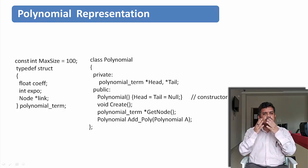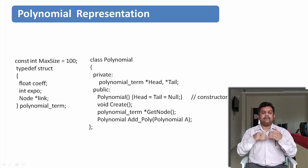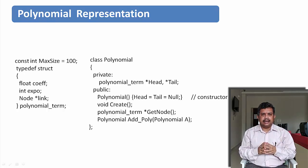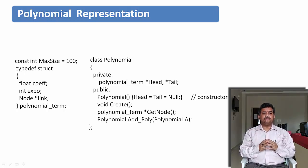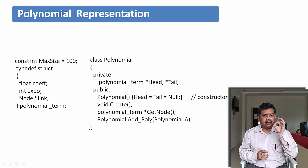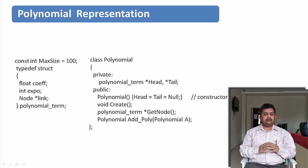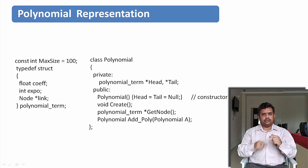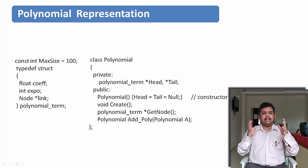In my previous video, you already know how to create a single linked list. In that video there was only one data part and one linked part. But here there will be two data parts and one linked part. The first data part will contain the coefficient, the second data part will contain the exponent, and there is a link for the address of the next node. So like that, I will be writing the polynomial using a linked list.